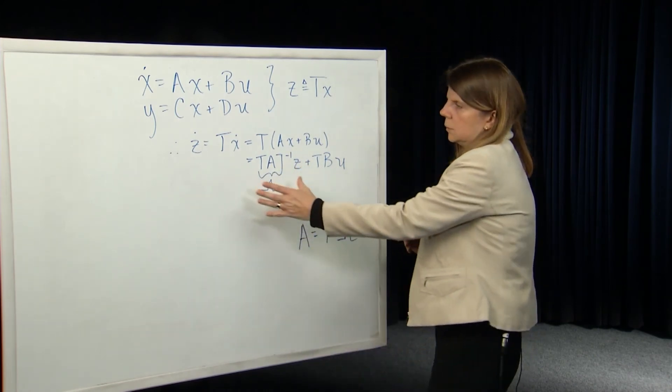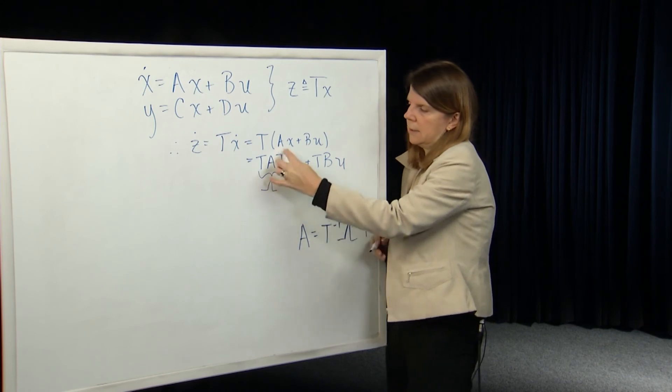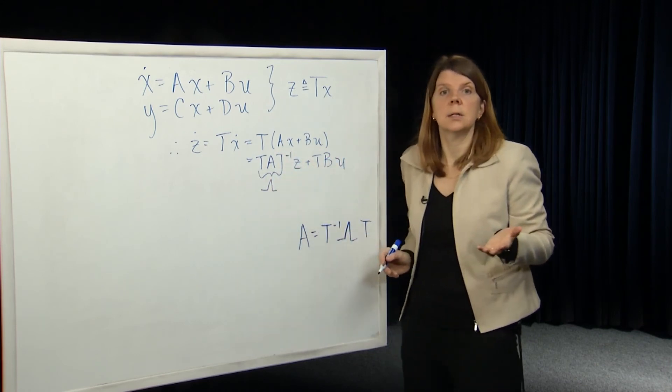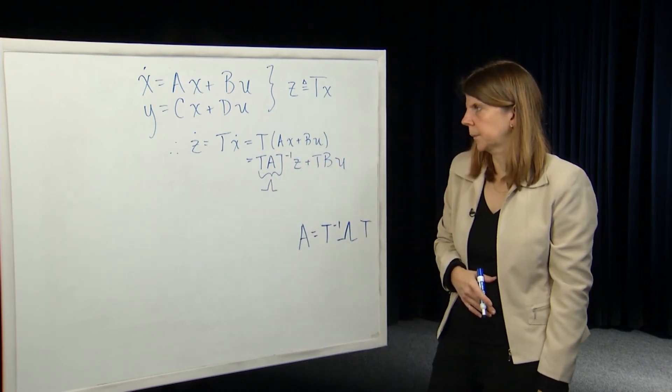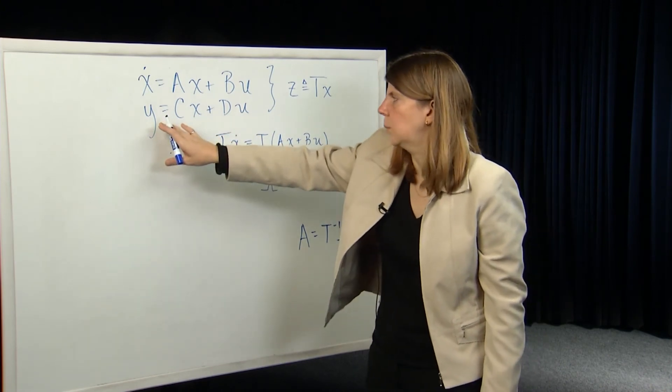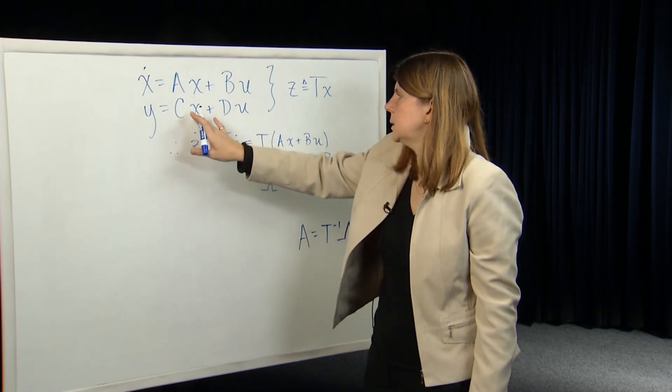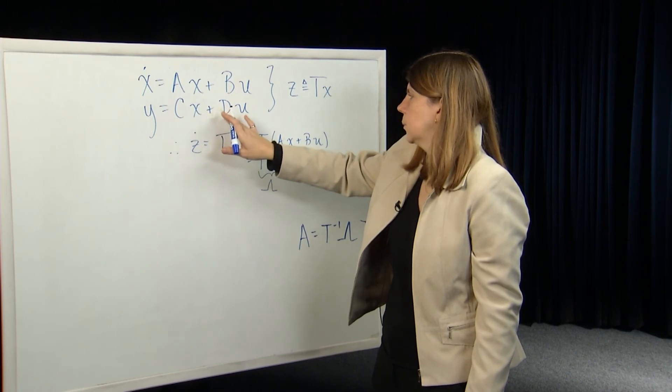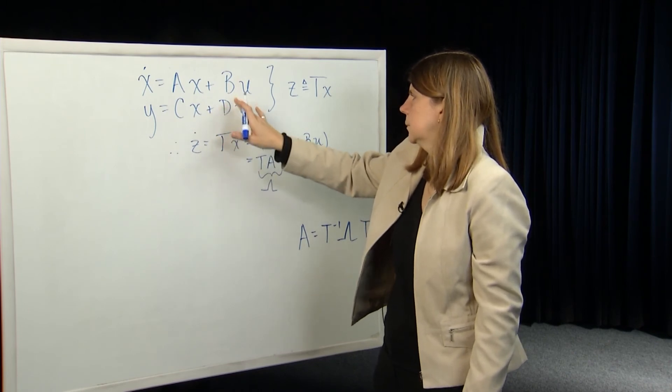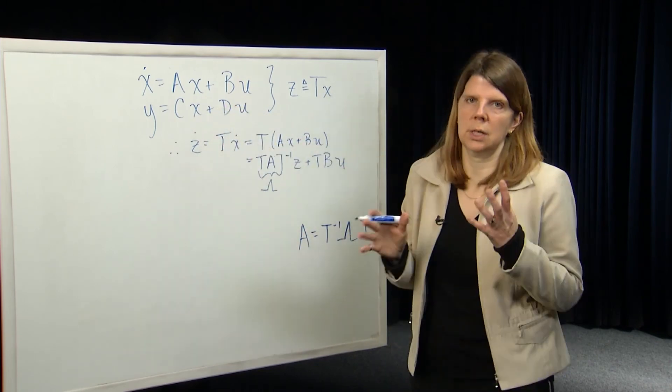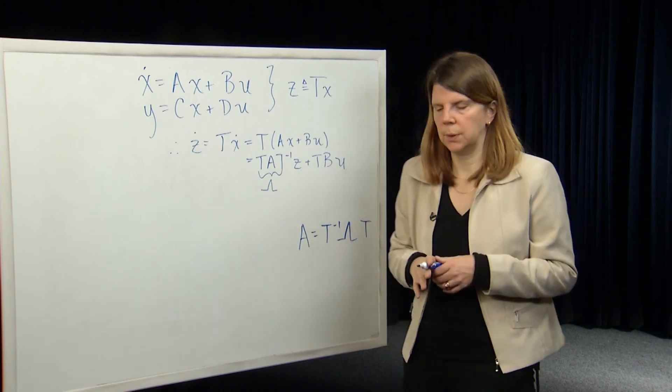So in this new system dynamic, the A matrix is the diagonal matrix. It's particularly simple. And you can do the same transformation here. So, you'll get that y is equal to CT inverse z, and then the matrix D doesn't change, because it just depends on the direct coupling between the input and the output.